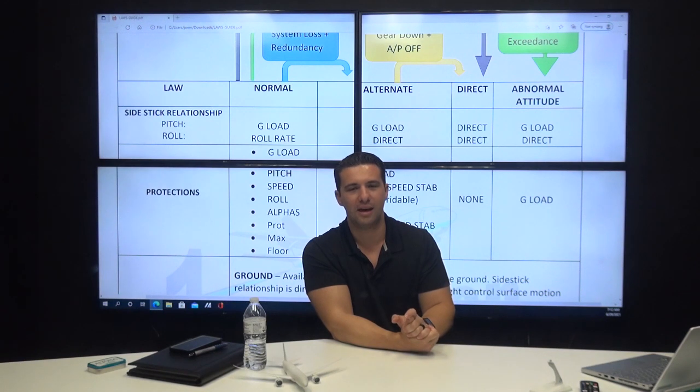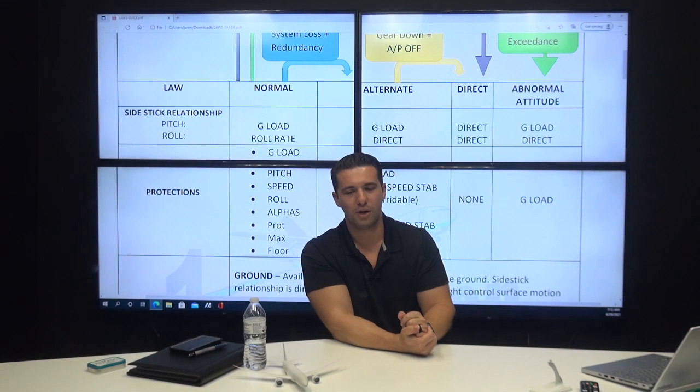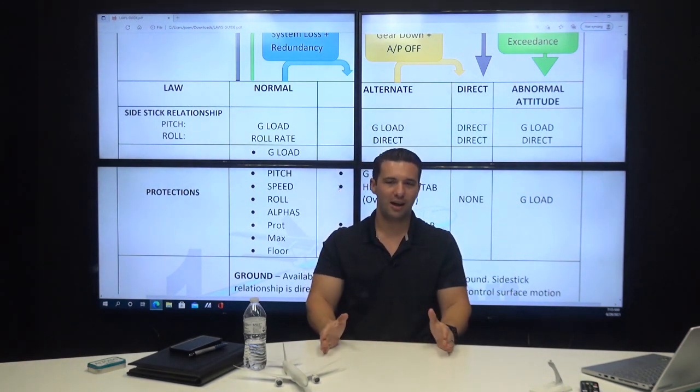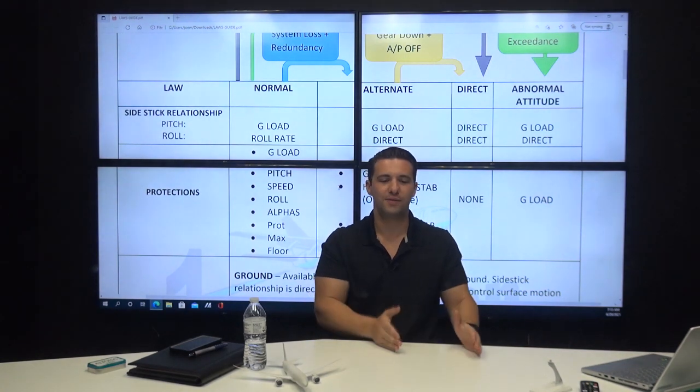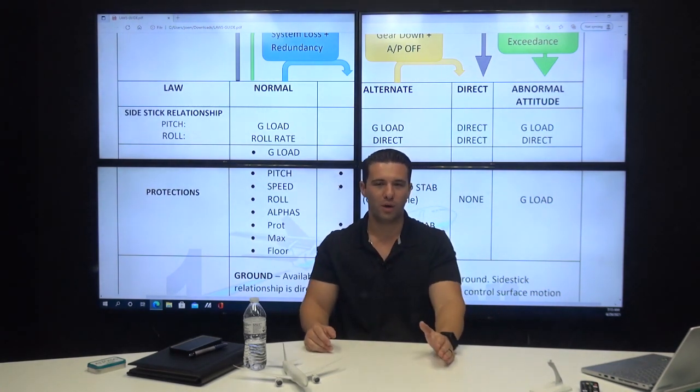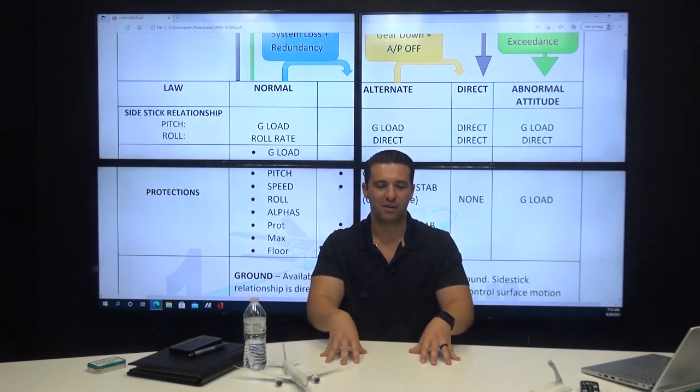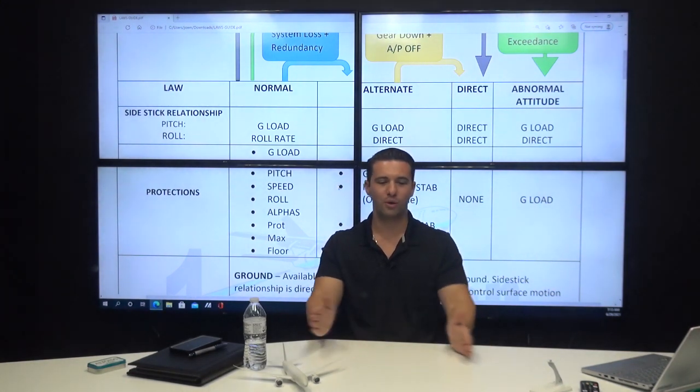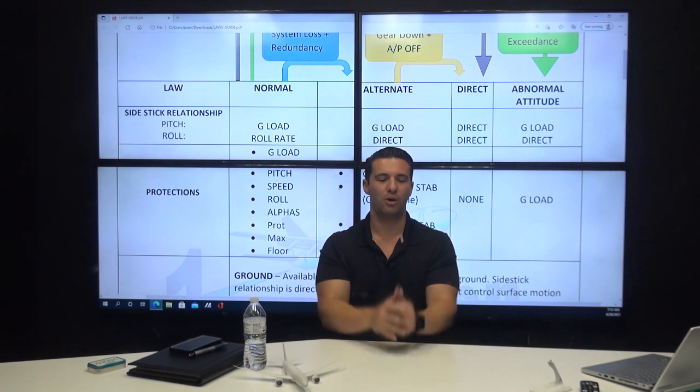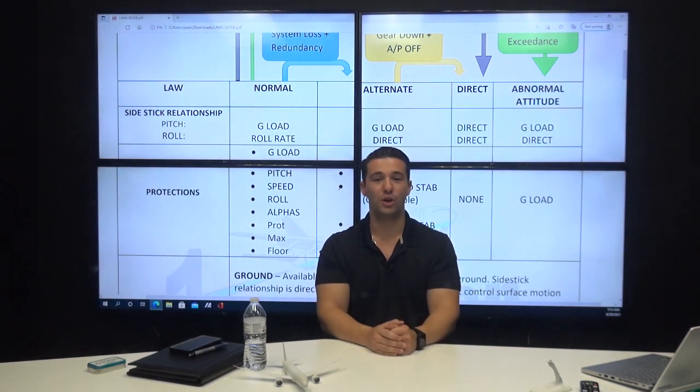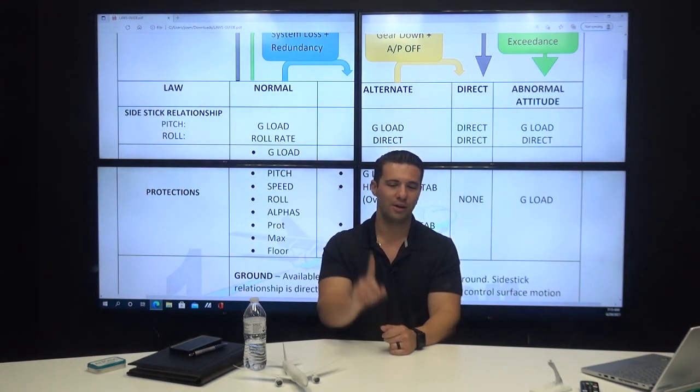What's not typically understood is that they derive their information from the FMGS, otherwise known as the flight management guidance system. And the auto thrust utilizes the FMGS that is slaved to the autopilot that is engaged. So if autopilot one is on, FMGS one. If autopilot two is on, FMGS two. So the auto thrust will utilize either number one or number two FMGS dependent upon which autopilot is engaged. And of course, if no autopilot is engaged, it defaults to FMGS number one.